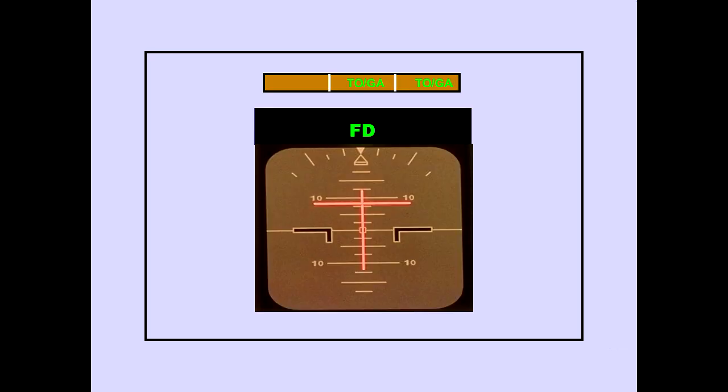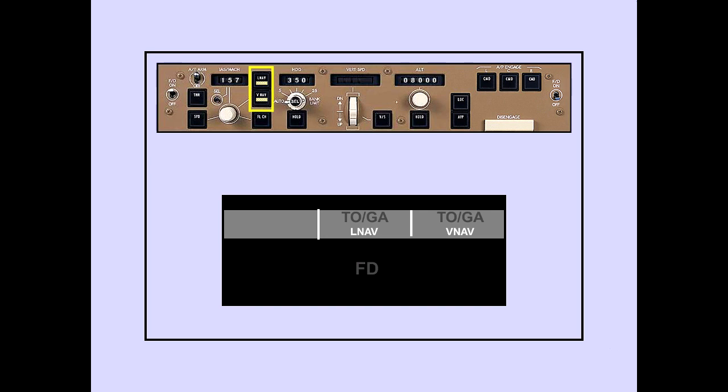The PFD displays TOGA for both pitch and roll and flight director for autopilot flight director system status. The command bars are displayed in a wings-level, 8 degrees nose-up position. LNAV and VNAV are normally selected during pre-flight, allowing automatic engagement after takeoff. LNAV and VNAV relate to the flight management system and will be discussed in the Autoflight LNAV and VNAV module.